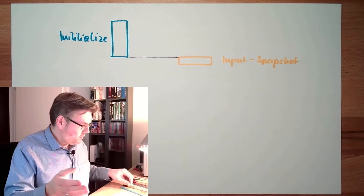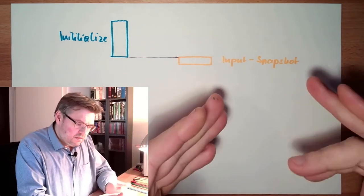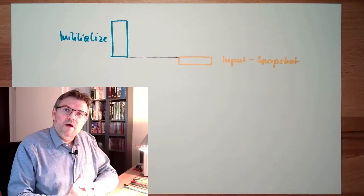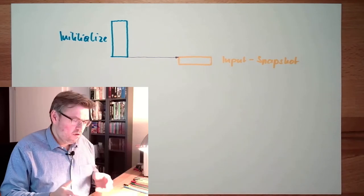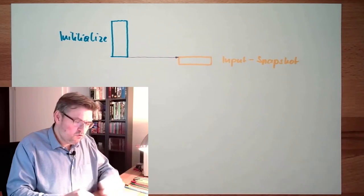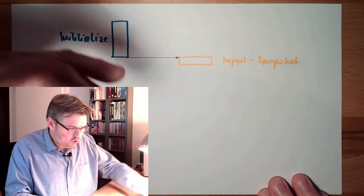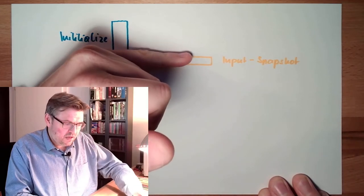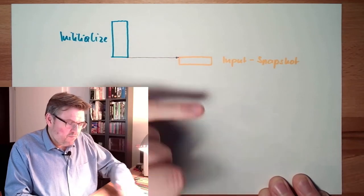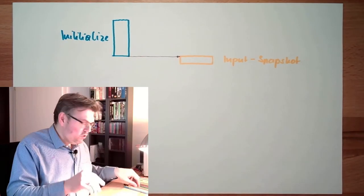This is necessary because we want to have a consistent behavior. If I access one and the same input during program execution, this is now the time. We take an input snapshot because now what follows next is the logic execution.